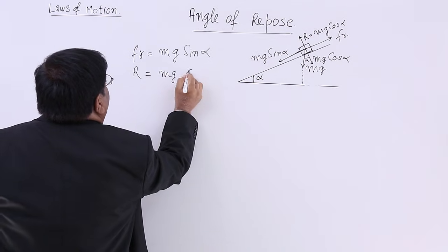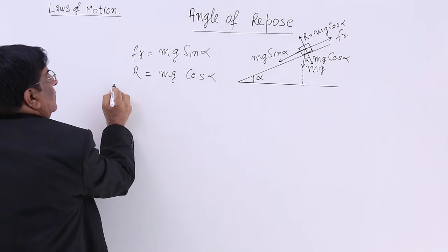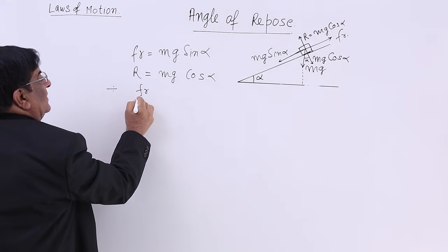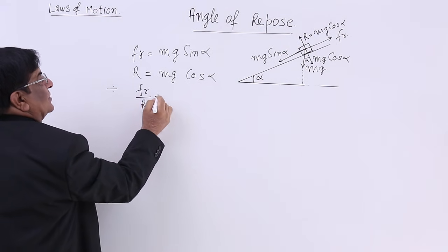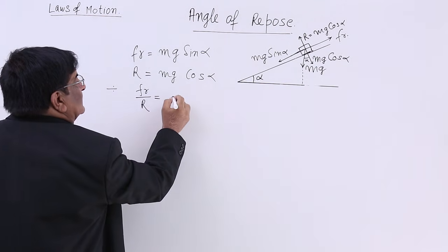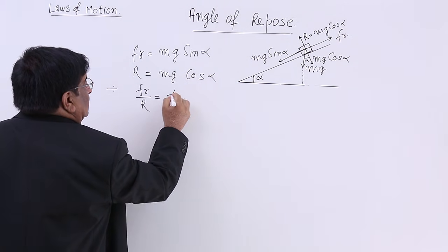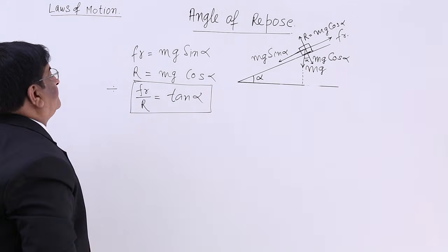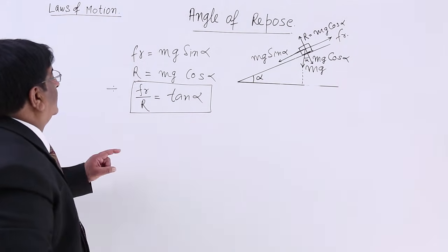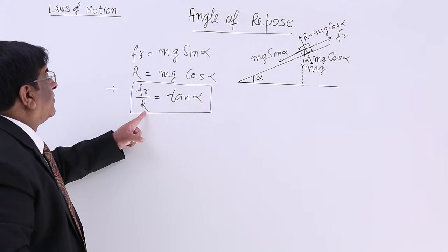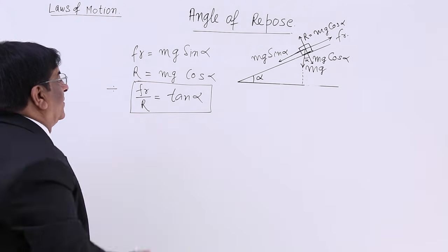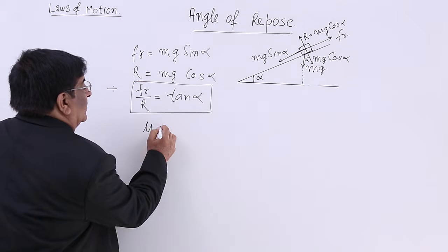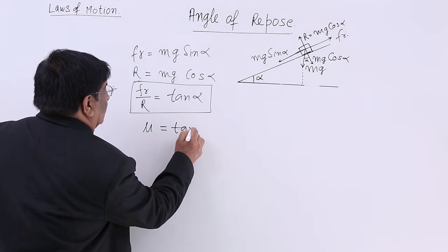We now divide these two equations. After division we get friction upon reaction equals mg sin alpha upon mg cos alpha — the mg cancels — giving tangent of alpha. So friction upon normal reaction equals tan alpha. But friction upon normal reaction we already know to be mu, the coefficient of friction. Therefore, mu equals tan alpha.